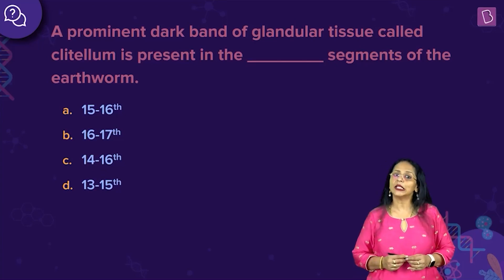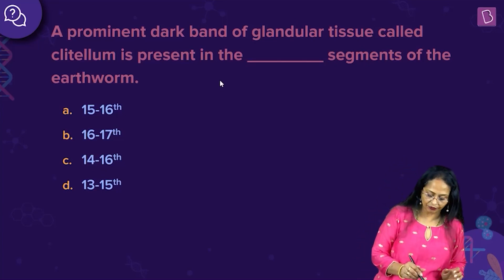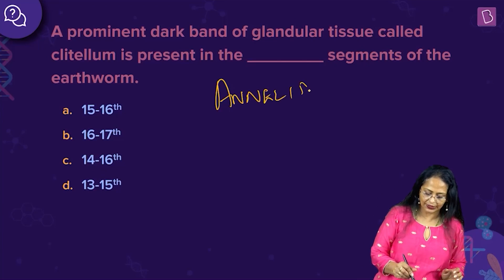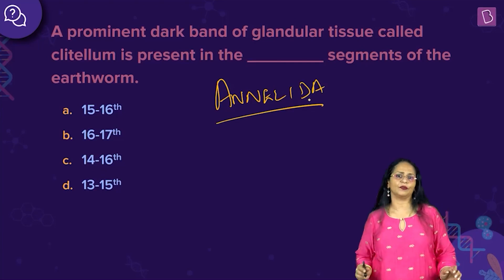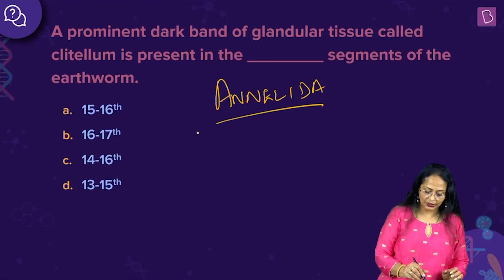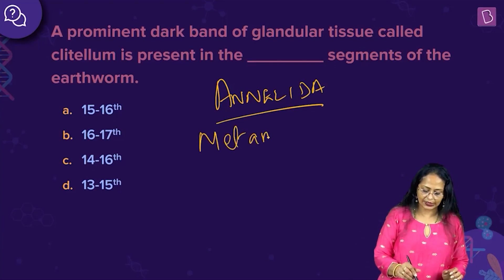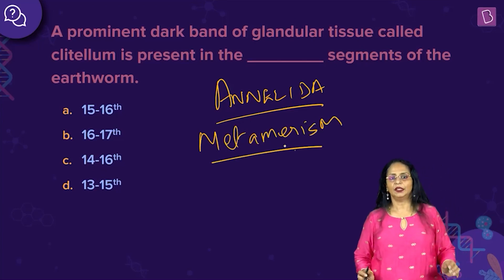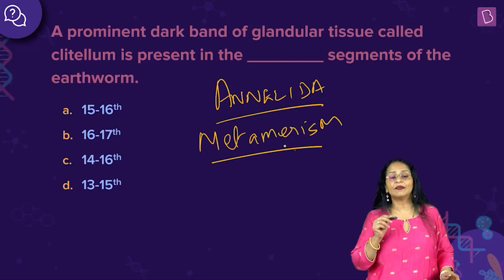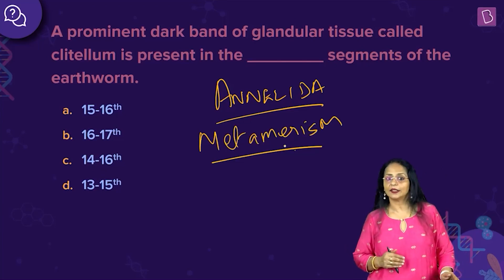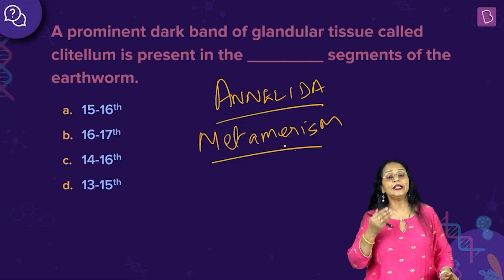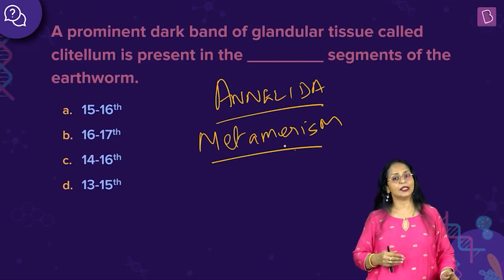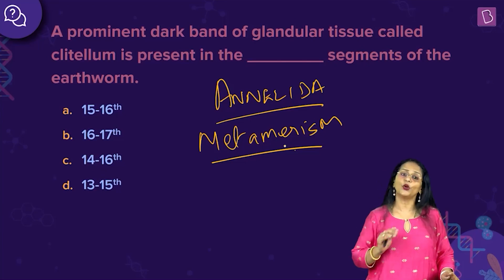Which phylum does earthworm belong to? Earthworm belongs to the phylum Annelida. What is the most unique feature of this phylum? They show true segmentation, or a feature called metamerism. What is metamerism? The body of the animal is divided into segments both externally and internally, and there is linear repetition of some of the organs in each of these segments. So earthworm shows metamerism.